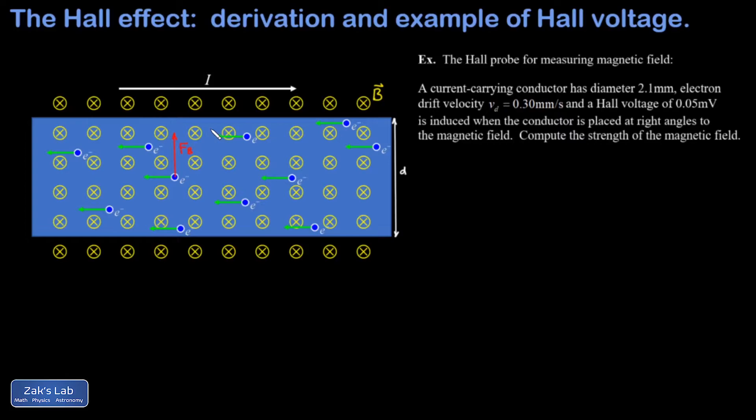Recall that the magnitude of that magnetic force is given by the Lorentz force law. The theta in the Lorentz force law is the angle between the velocity vector and the magnetic field, and that's 90 degrees here, so the sine of theta is going to be one.